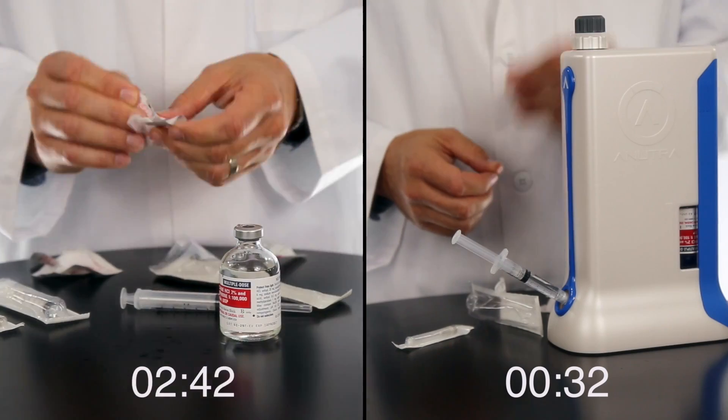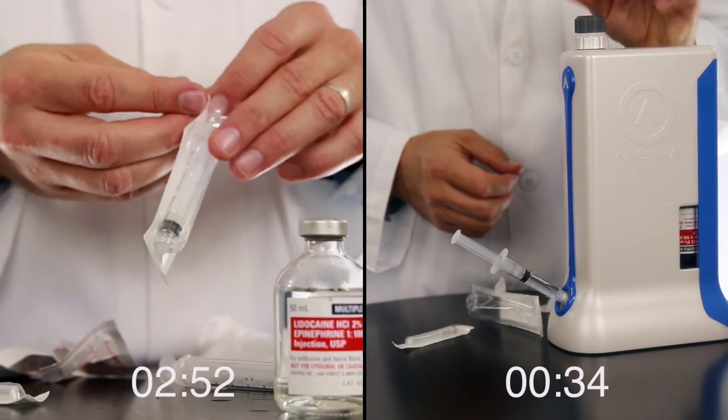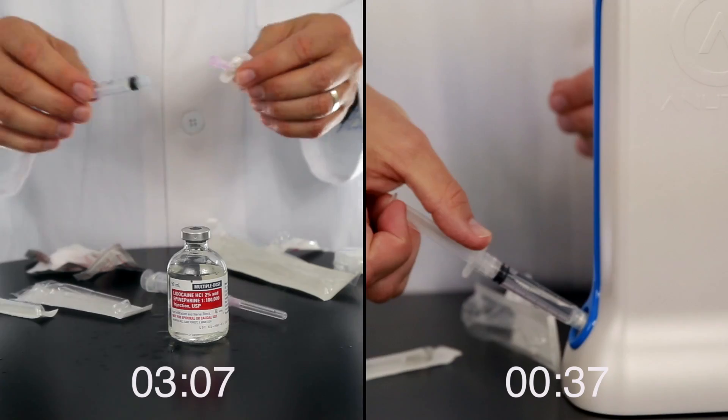If you want 3 ml of buffered lidocaine, click one more time and pull to the 3 ml mark.